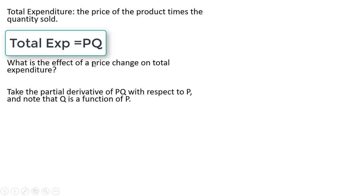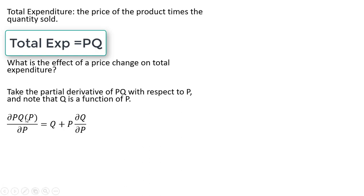To do this, we're going to take the partial derivative of the total expenditure function with respect to P, the price. We also need to recall that Q, the quantity, is a function of price. So when taking this partial derivative, this Q is not Q times price — it's just reminding us that Q is a function of price.